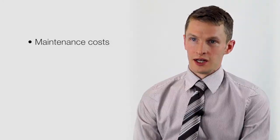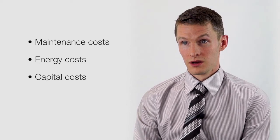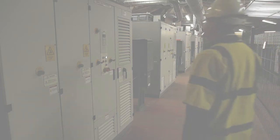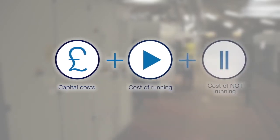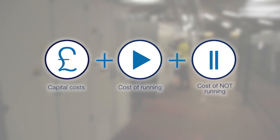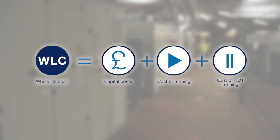So maintenance costs, energy costs, the capital price of the equipment to begin with — it impacts people's decision-making process. There's traditionally a lot of focus on the capital cost of the equipment, and actually when we look at rising energy prices over time and the cost of maintaining equipment when it fails — in terms of environmental costs, fines, and also the downtime it causes and the disruption to customers — then the Totex approach and looking at the whole life cost of that asset really needs to encompass all aspects of the life of that piece of equipment.